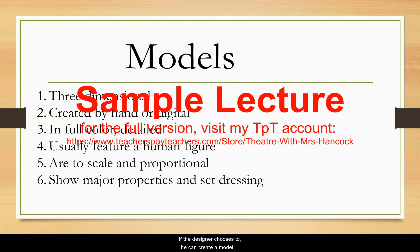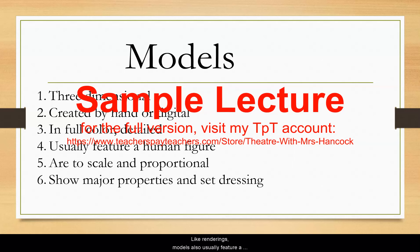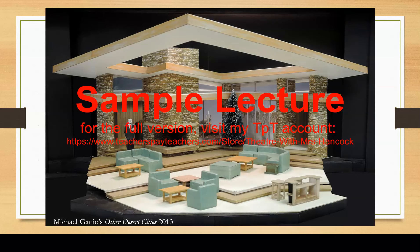If a designer chooses to, he can create a model instead of a rendering. Where a rendering is 2D, a model is 3D and shows the detailed set to scale. They are often created by hand, but digital models are becoming more popular as the software evolves. Like renderings, models also usually feature a human figure to give you a sense of scale and to add a little life to the stage. This model is a half-inch scale, meaning that for every foot on stage there is a half an inch on paper.